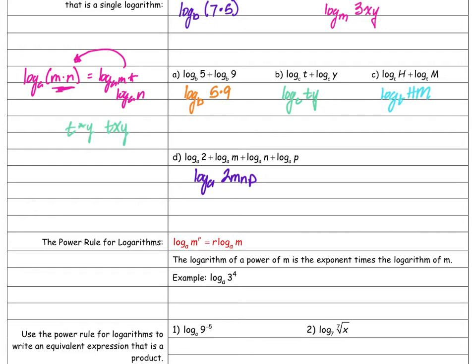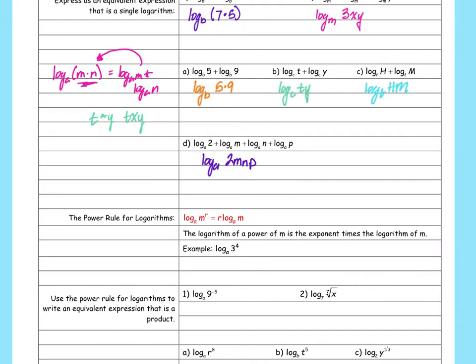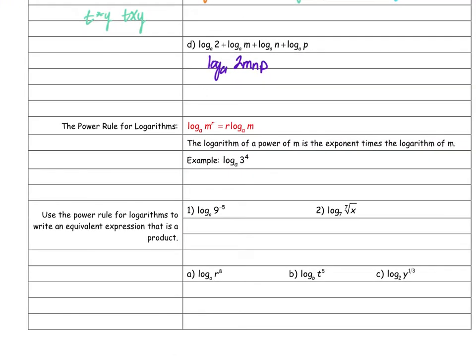Now we move to the second rule: the power rule of logarithms. It says log base a of m to the r equals r times log base a of m — the exponent moves to the front. Here's why it works: log base a of 3 to the fourth means log base a of 3 times 3 times 3 times 3.